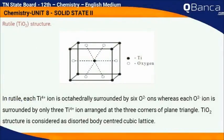In rutile, each Ti⁴⁺ ion is octahedrally surrounded by 6 O²⁻ ions, whereas each O²⁻ ion is surrounded by only 3 Ti⁴⁺ ions arranged at the 3 corners of a plane triangle. The TiO2 structure is considered as a distorted body-centered cubic lattice.